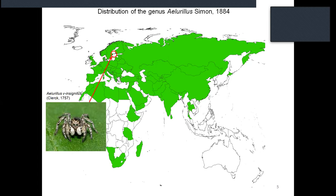The type species, Allurellus venustus, was described from Sweden by Clerck back in 1757. Unfortunately the type specimen is lost, but the detailed description and features of the male, like the pattern on the abdomen region, can easily allow us to identify specimens as Allurellus venustus.